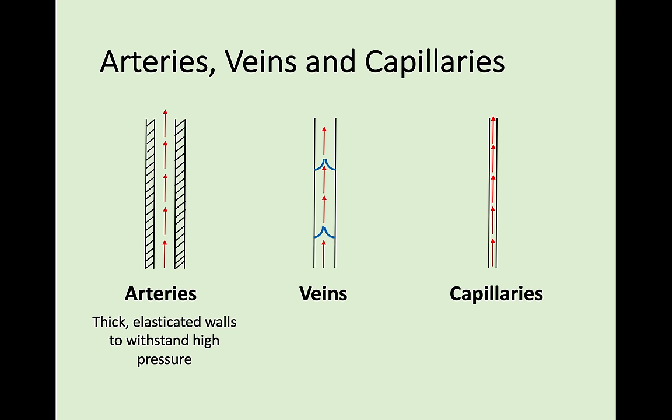Starting with arteries - in this diagram you can see they're quite thick. On the left and right side of the artery they have thick elasticated muscular walls in order to withstand very high pressure. Blood goes through arteries at a very high pressure, so they've got thick walls and a narrow central channel for blood to get through.